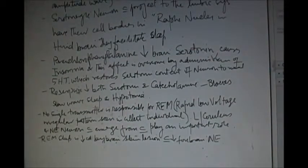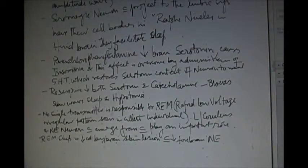As we discussed before, chlorophenylalanine blocks the conversion of tryptophan to 5-HT and this chlorophenylalanine decreases the brain serotonin and this causes insomnia. This effect is overcome by administration of 5-HT which restores the serotonin content of the neuron to normal level.